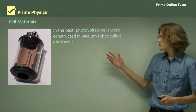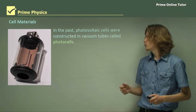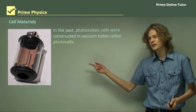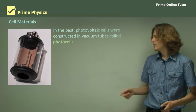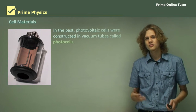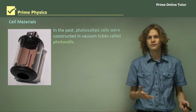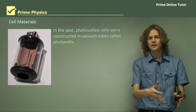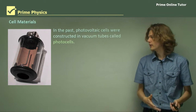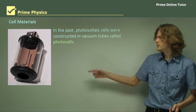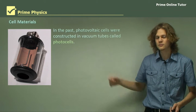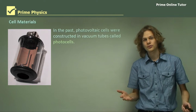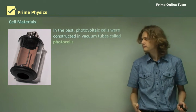In the past, photovoltaic cells were constructed in vacuum tubes — we can see a picture of one here. They were called photocells, and they use the photoelectric effect as we've learned about. They simply use ultraviolet light shining onto an electrode, which is the metal rod in the middle of this vacuum cell, to generate electrons, which is a photocurrent.